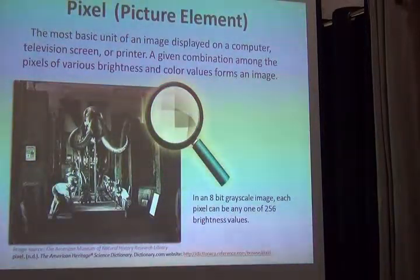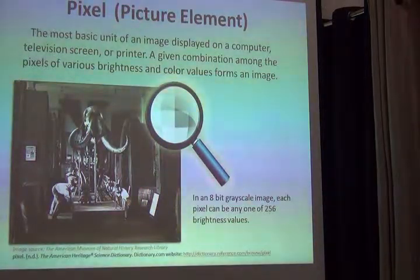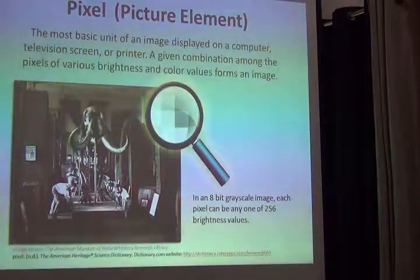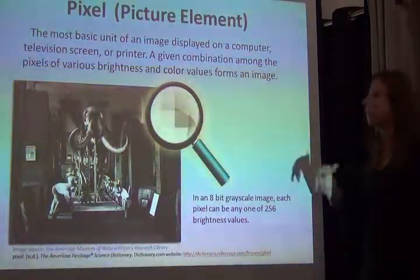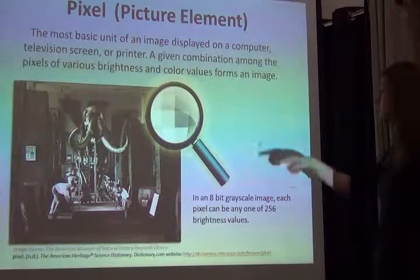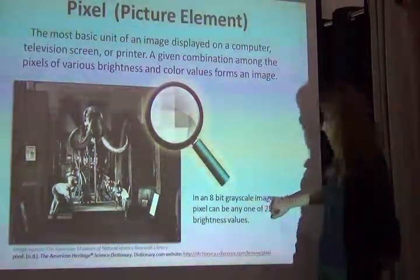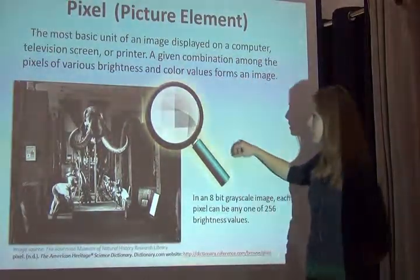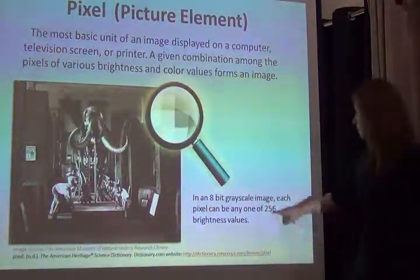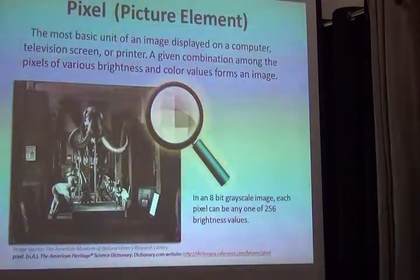In order to better understand how we do that, we have to think about what are the building blocks of an image. Pixels — we often hear the word pixel, but not all of us really know what it is. It's the most basic unit of an image that we see on a computer, or that's printed, or on a television screen. In a grayscale image, you can see any combination of very light to very dark pixels. You can have as many as 256 brightness values per pixel in an image.